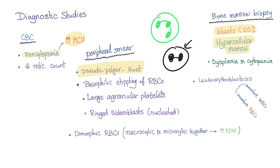On bone marrow biopsy, you will find blasts less than 20%. If blasts were more than 20%, this is acute leukemia. The blasts are myeloid blasts. You will also find hypercellular marrow — different from aplastic anemia which had hypocellular marrow — and dysplasia. Leukoerythroblastosis can be found, meaning immature white blood cells and immature red blood cells.